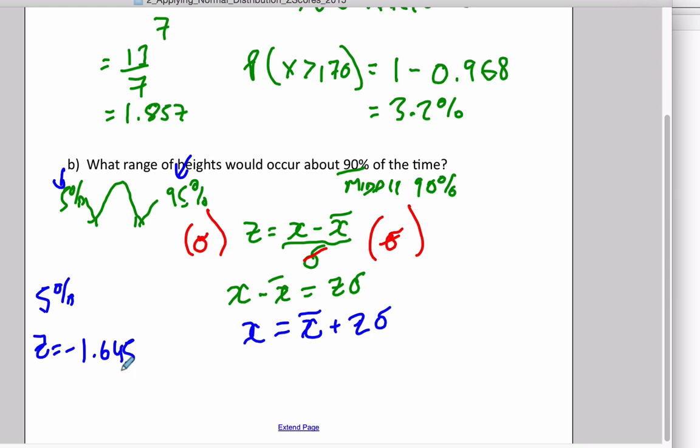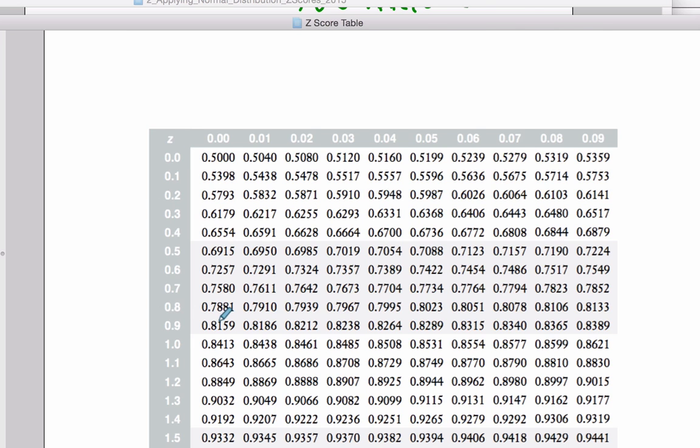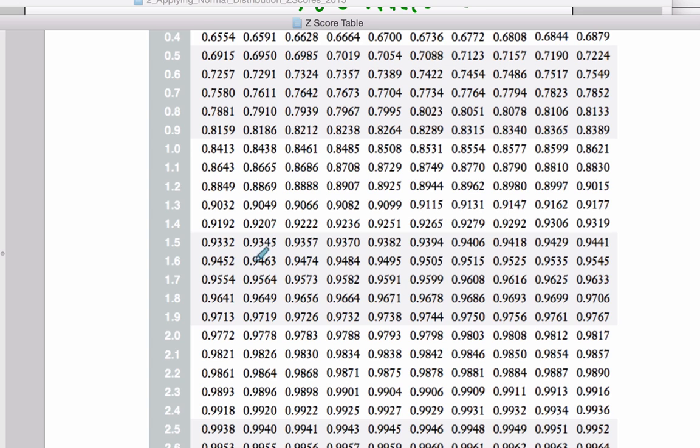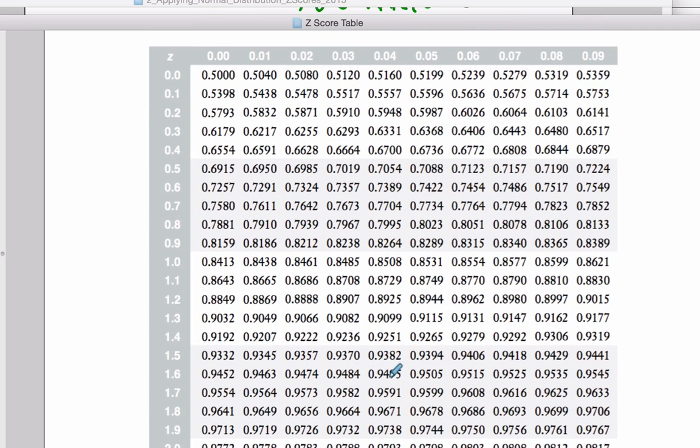And if we look at the 95th percentile in our table, and hopefully this makes sense to you, we go down, we find the 95th percentile is going to be halfway between... so here is 1.64, and here's 1.65. And you'll notice that the 95th percentile lies right in the middle of these two, so we can say that the 95th percentile is going to have a Z-score of 1.645.